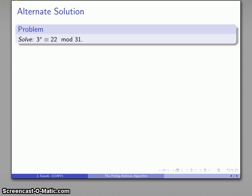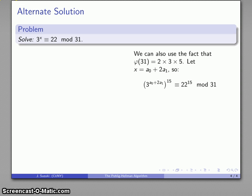Now it's worth noting that this was not the only way we could have found the solution. We could have broken φ(31) into smaller factors, 2 by 3 by 5. And so in this case, I'll let x be a₀ plus a multiple of 2. And so my missing factor, since I have a multiple of 2, I need a 15 to get me up to 30. So I'll raise everything to the 15th power.